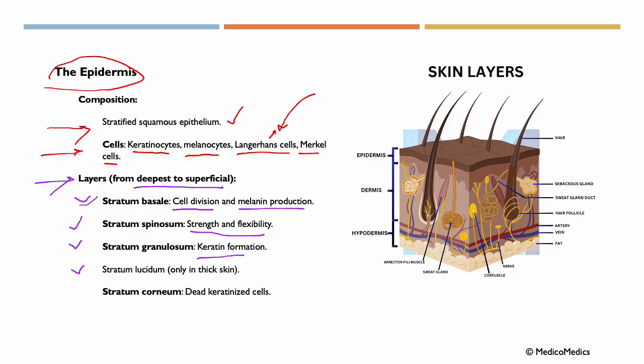Then we have the stratum lucidum, a clear and thin layer found only in thick skin, like our palms or soles, for added protection. Then we have the stratum corneum. It's the outermost layer of dead keratinized cells that form a tough protective barrier. And this structure ensures skin provides physical protection, immune defense, and sensory input.